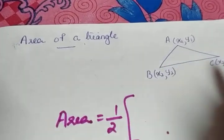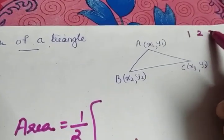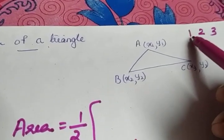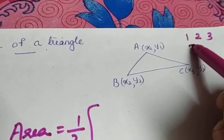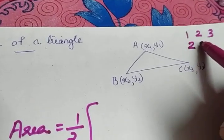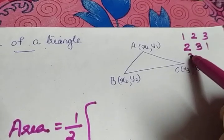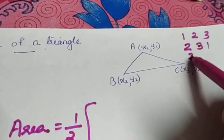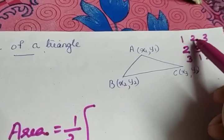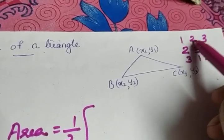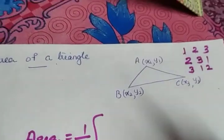We will write the terms in order: 1, 2, 3. If I start with 1, I write 1, 2, 3. If I start with 2, I write 2, 3, 1. And if I start with 3, I write 3, 1, 2. So the same cyclic order applies: 1-2-3, 2-3-1, 3-1-2.